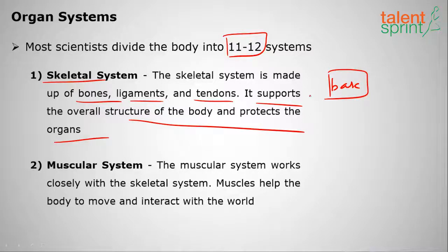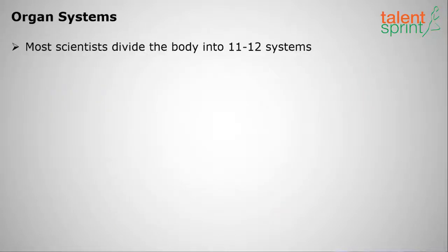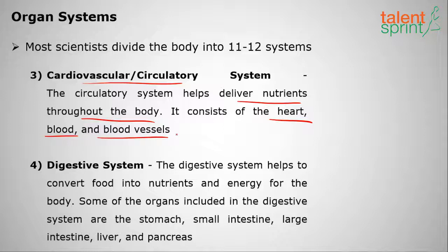The muscular system works closely with the skeletal system. Muscles help the body move and interact with the world. Moving on to the third organ system — the cardiovascular or circulatory system — this helps deliver nutrients throughout the body. It consists of the heart, blood, and blood vessels.